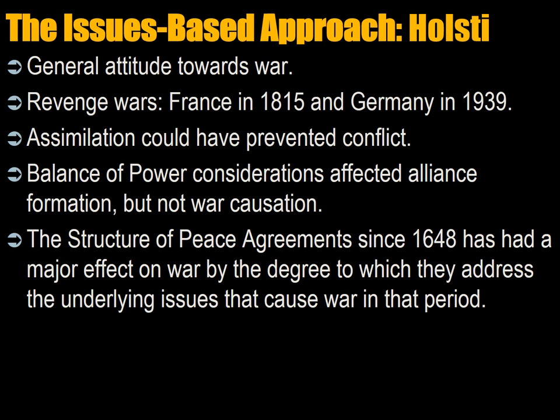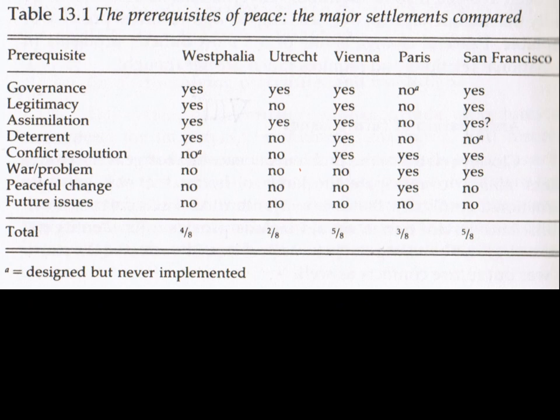Why would a country go to war if it was not for profit? To some extent we can anthropomorphize a country if we can anthropomorphize the decisions by the leaders. Germany's war in 1939 was also a revenge war — Hitler wanted to replay World War I, but this time without the chronically weak institutions of Wilhelmine Germany. There is a question about whether faster assimilation of these states could have prevented conflict. Balance of power considerations affected alliance formation, but they didn't affect what caused countries to go to war. The structure of peace agreements since 1648 has had a major effect on war, by the degree to which they addressed the underlying issues that caused wars during those periods.